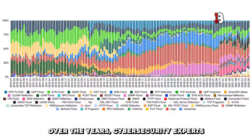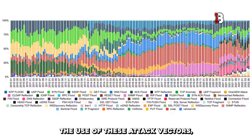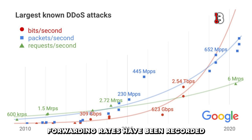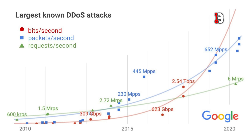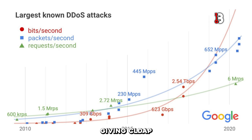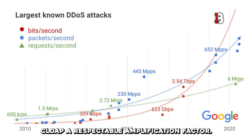Over the years, cybersecurity experts have tracked the use of these attack vectors, and average attack size ranges from 1GB per second to 100GB per second. Forwarding rates have been recorded anywhere from 1,000,000 packets per second to 100,000,000 packets per second, giving CLDAP a respectable amplification factor.